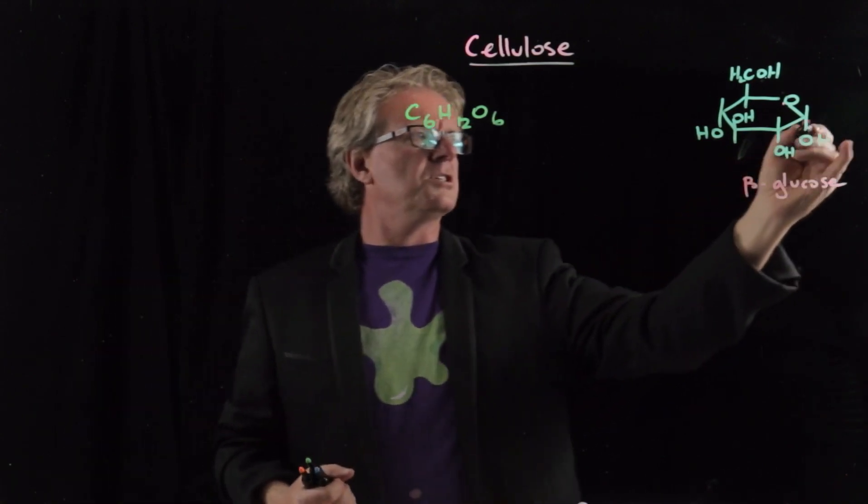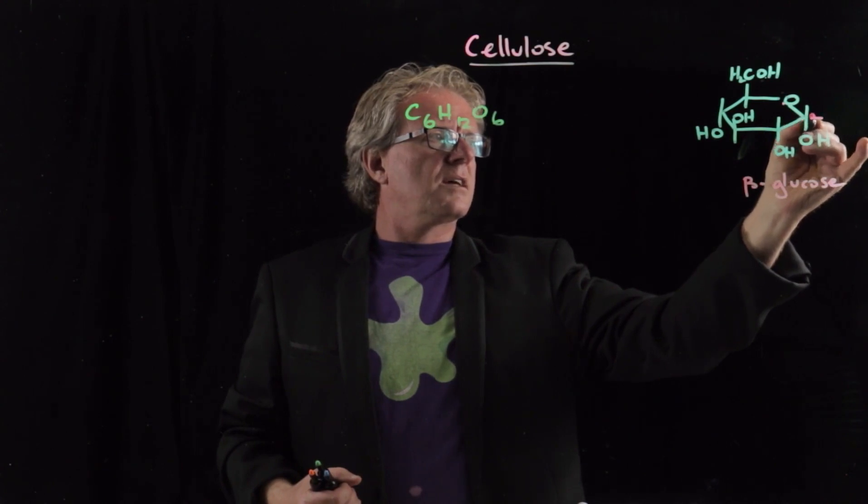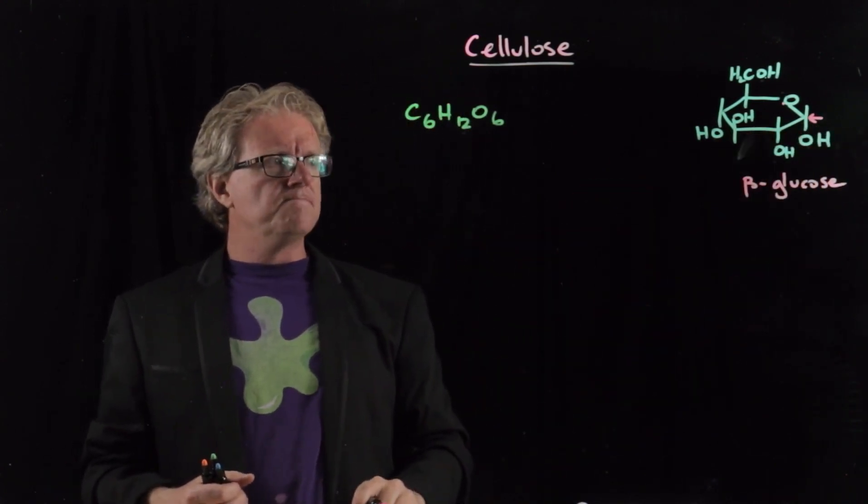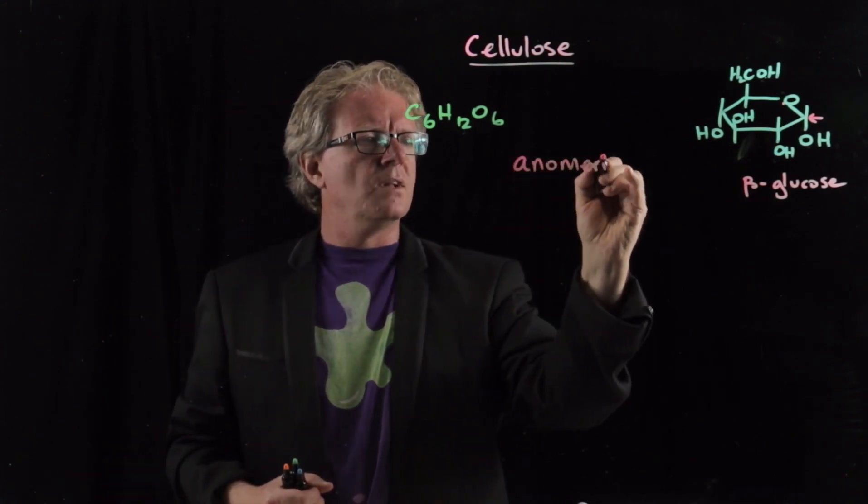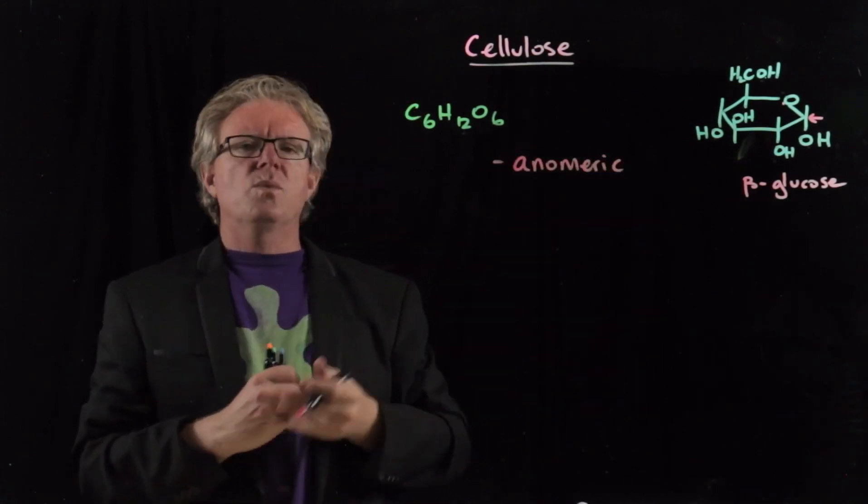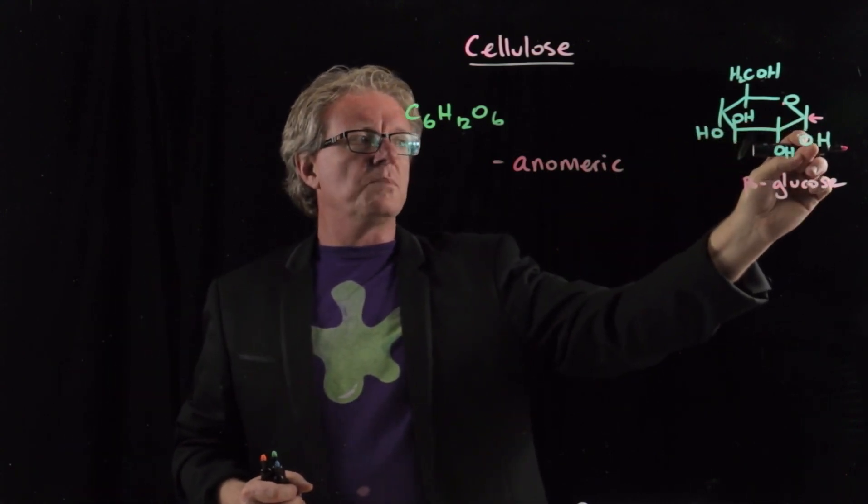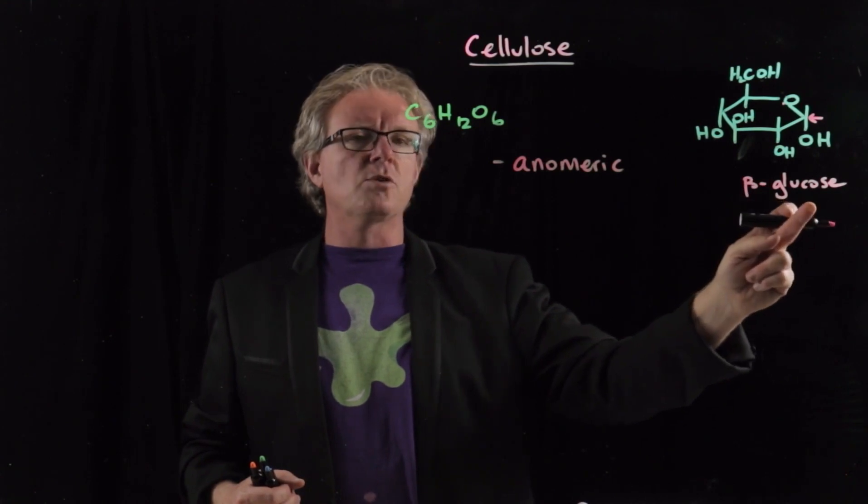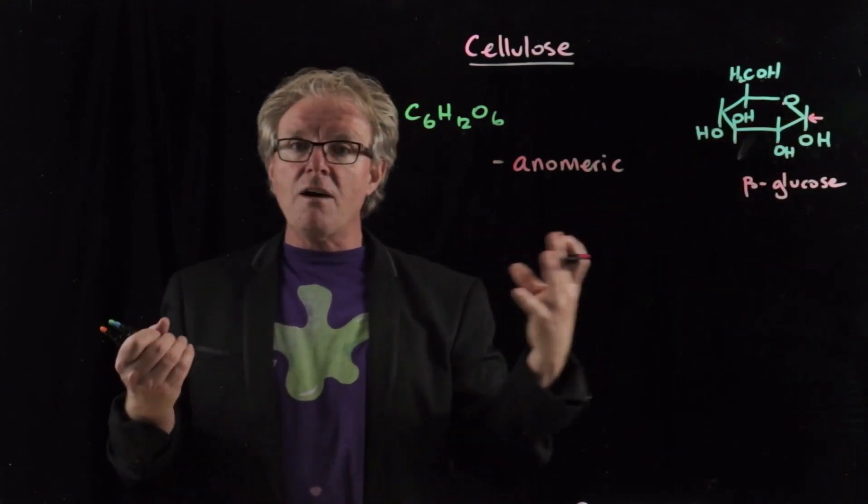Now a few bits of terminology. This carbon right there is called the anomeric carbon. It is the site where we can have this OH group being below the ring or above the ring. When it's below the ring, we say it's beta-glucose. When it's above the ring, we say it's alpha-glucose.